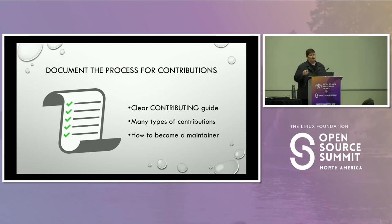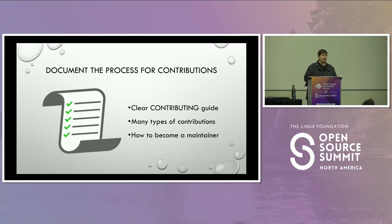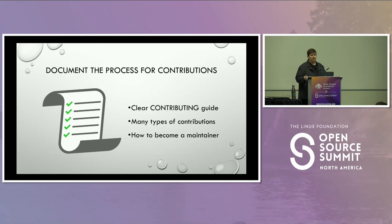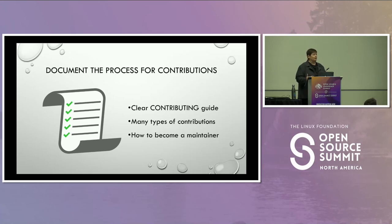The process for contributions will differ — doing a new feature versus fixing a typo in a document is probably going to be different, and we should document how to handle both. Ensure your contributing guide is clear. Talk to people about what you're expecting from them and what requirements you want in a pull request. You can use pull request templates. Besides bug fixes and features, you might have people who want to do testing, create issues, or do documentation updates — document each of those contribution paths clearly.